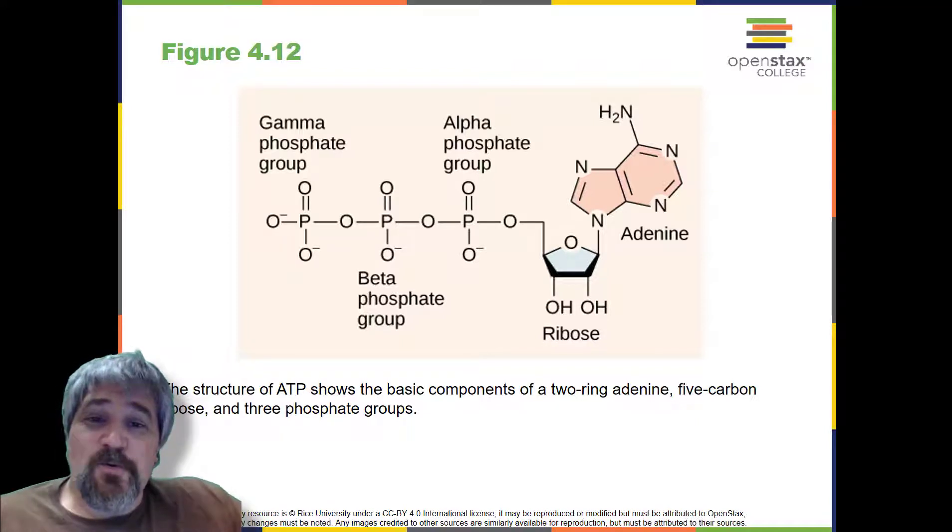The addition of a phosphate group to a molecule requires a high amount of energy and results in a high energy bond. Phosphate groups are negatively charged and thus repel one another when they are arranged in series, as they are in ADP and ATP. This repulsion makes the ADP and ATP molecules inherently unstable. The release of one or two phosphate groups from ATP, a process called hydrolysis, releases energy.